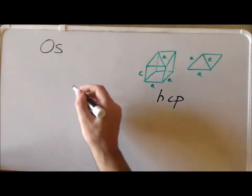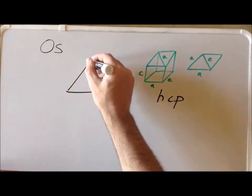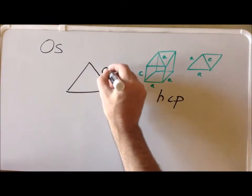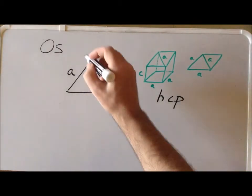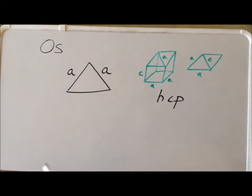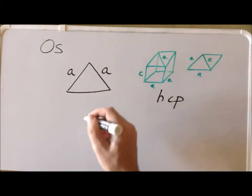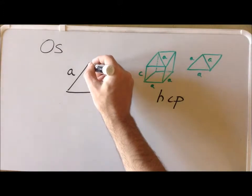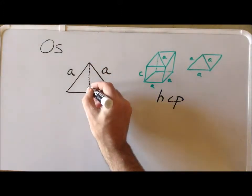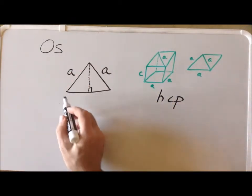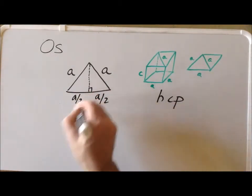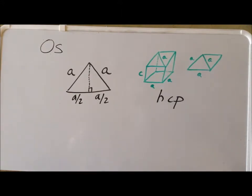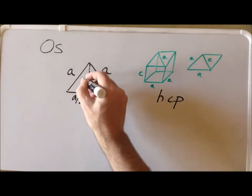Looking at each individual equilateral triangle, we notice that the edge lengths are A. Therefore, the base is going to be A. To compute the height, we're going to use the fact that the area of a triangle is one-half times the base times the height. We can draw a perpendicular bisector, and the effect of this bisector is to divide the base into two parts, each of which has length A over 2. Then we can use the Pythagorean theorem to compute what the height of the triangle is going to be.